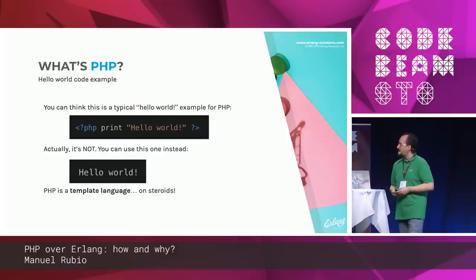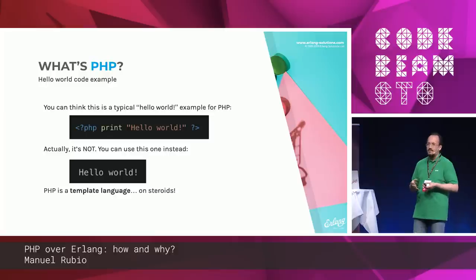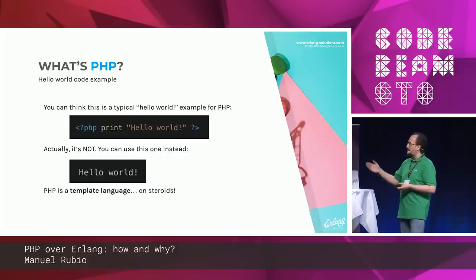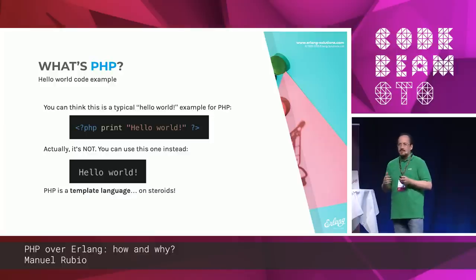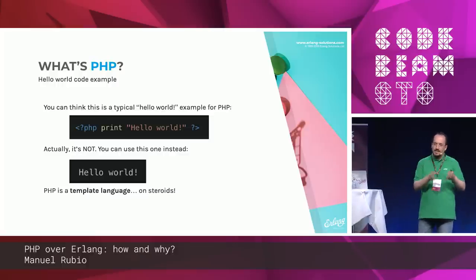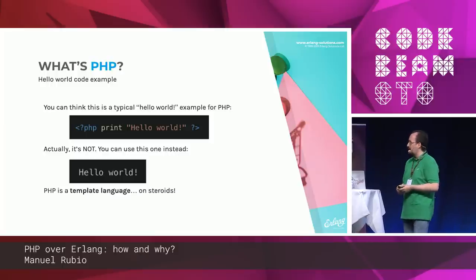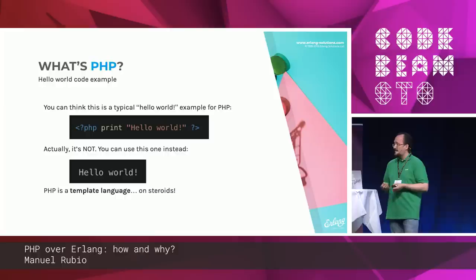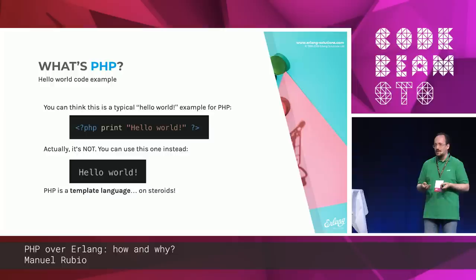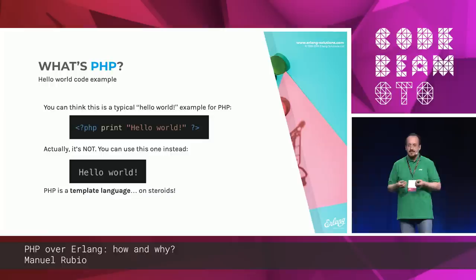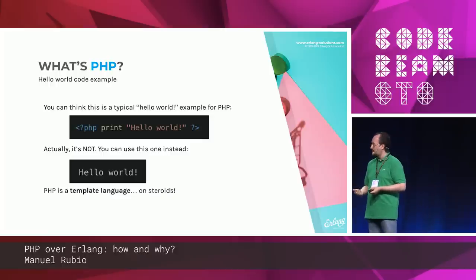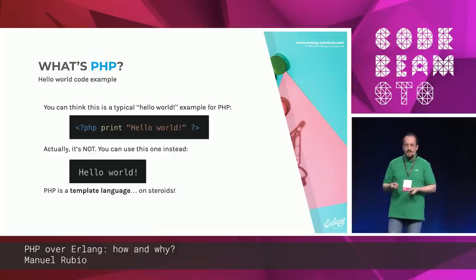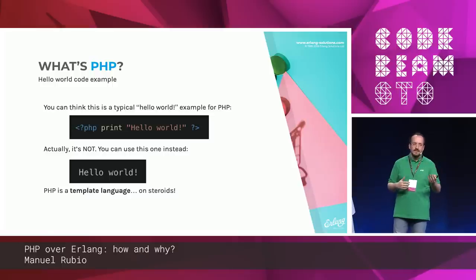Looking at the typical hello world example — if you want to write one in PHP, you can write it the first way. But PHP is actually a template language, meaning if you write a file with just plain text 'hello world' and run it in a web server or shell console, you get exactly the same result. Even the creator of PHP said the second example is the real hello world. So PHP is not a general-purpose language — it's a template language intended to generate output from a template.